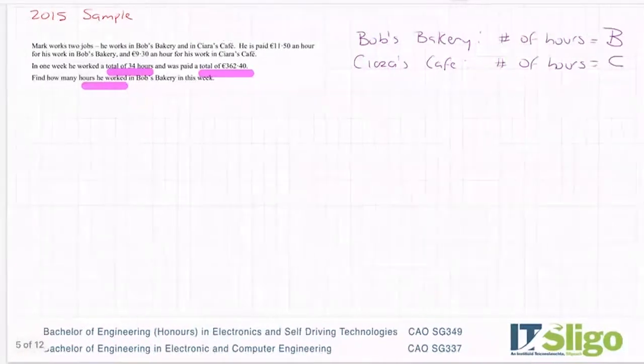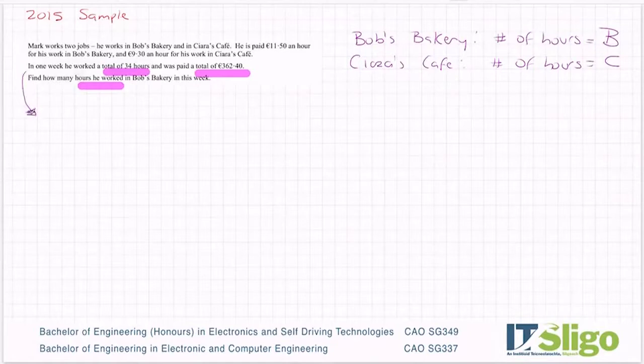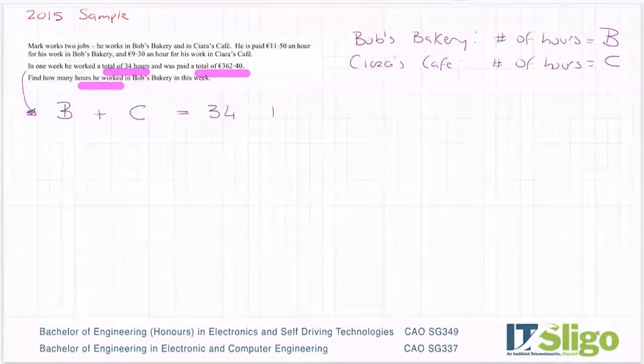So how many hours then did Mark work? Well, we know he worked 34 hours. So the number of hours he did in Bob's Bakery plus the number of hours he did in Ciara's Cafe must equal 34. So we've two unknowns, B and C. We're going to be setting up simultaneous equations. So there's the first one.